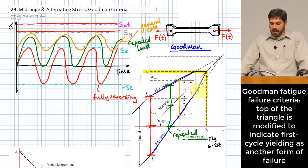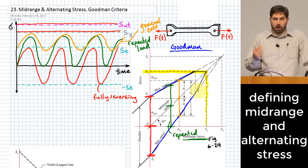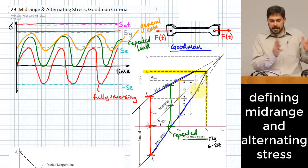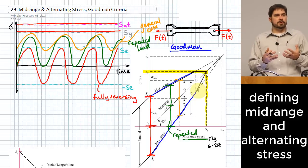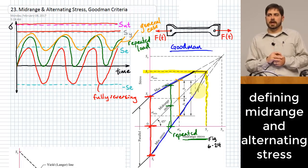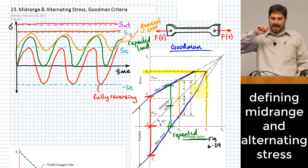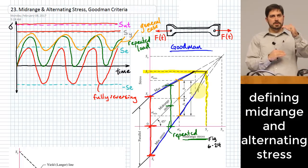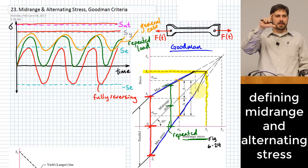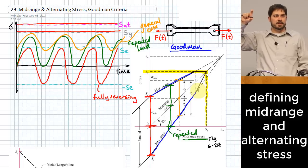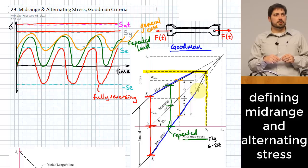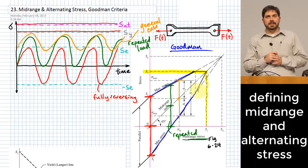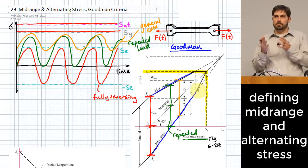All these cases of fatigue — where we don't have either purely fully reversed loading or a repeated load — require language to describe how bad these states of stress are for the loading profile applied. Is it worse to have stress fully reversed, or to have some static level of stress with an alternating component on top? How do all those states of stress play into the possibility that your part could fail before reaching an infinite number of cycles?